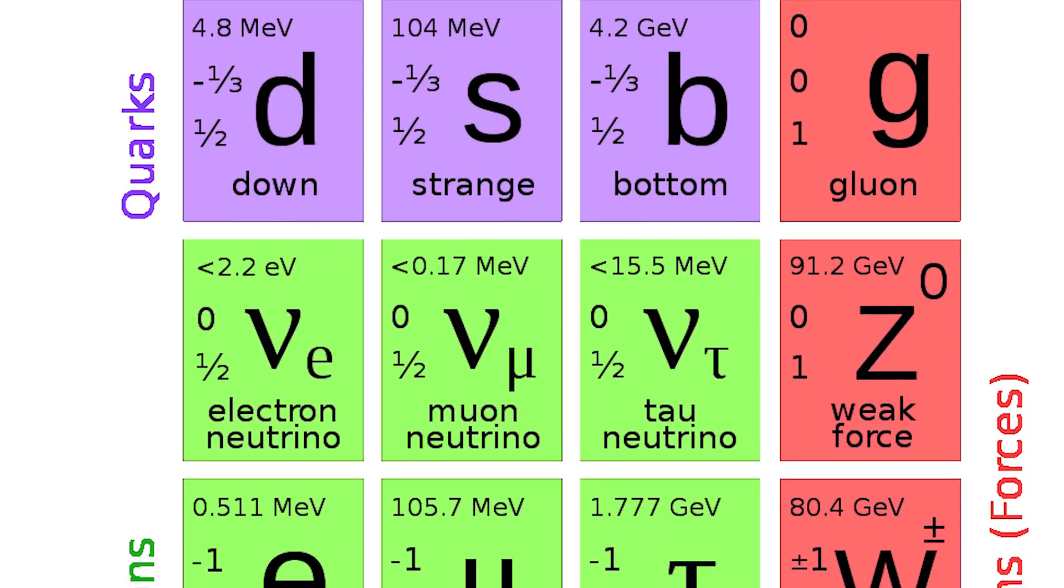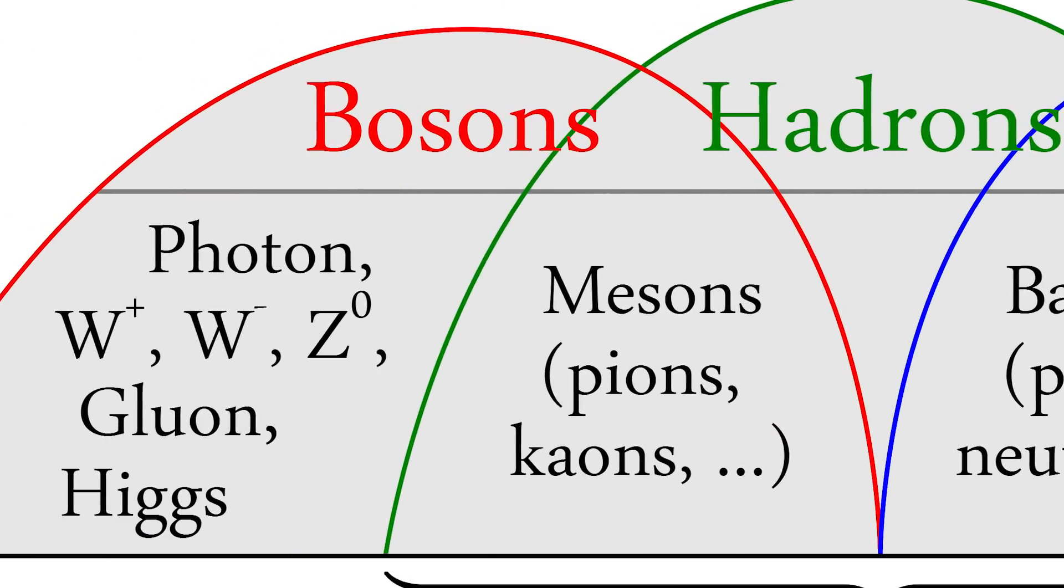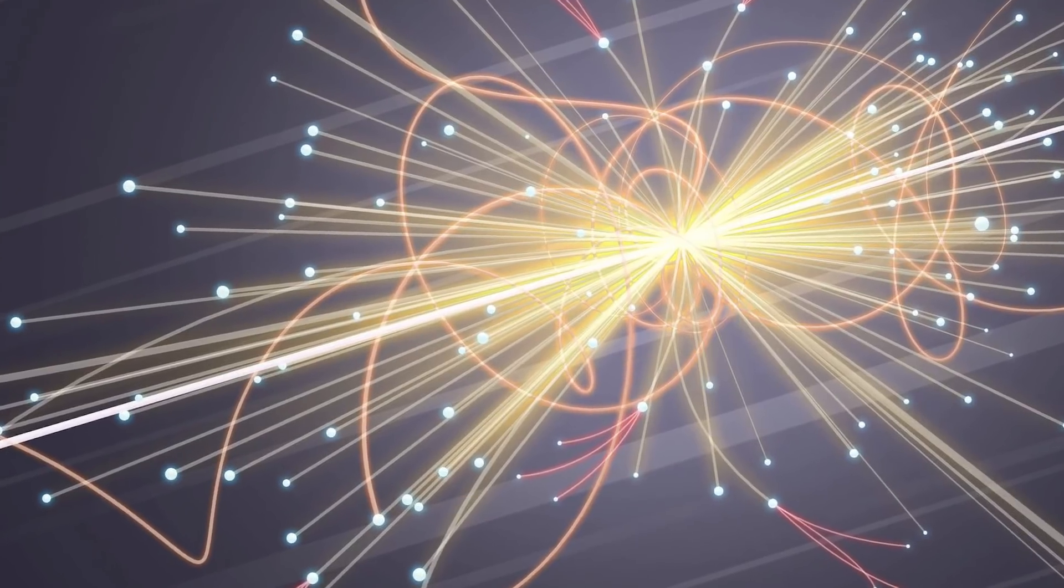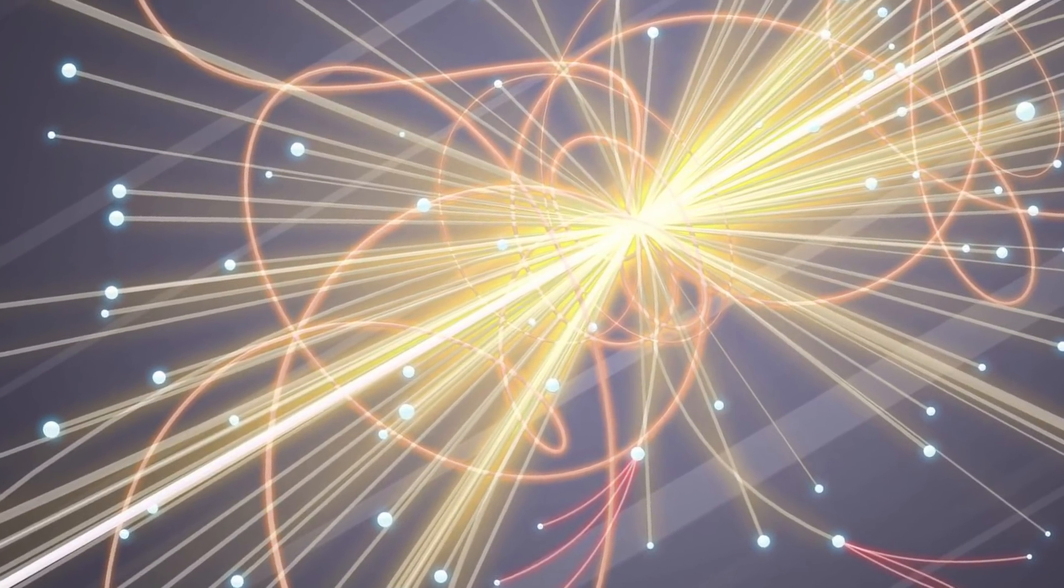According to the Standard Model, there are two types of fundamental particles: fermions, which are what matter is composed of, and bosons, which carry forces. These particles are identified and ordered in terms of several properties, specifically mass.